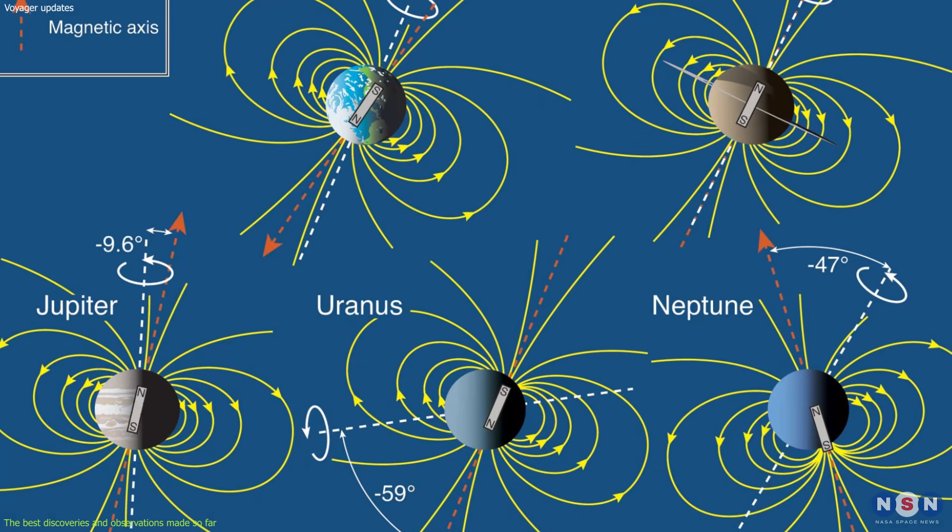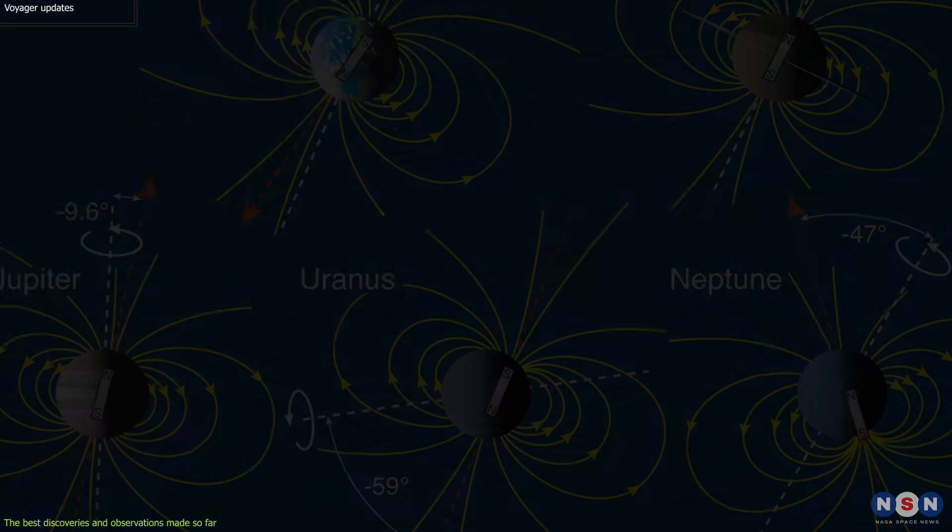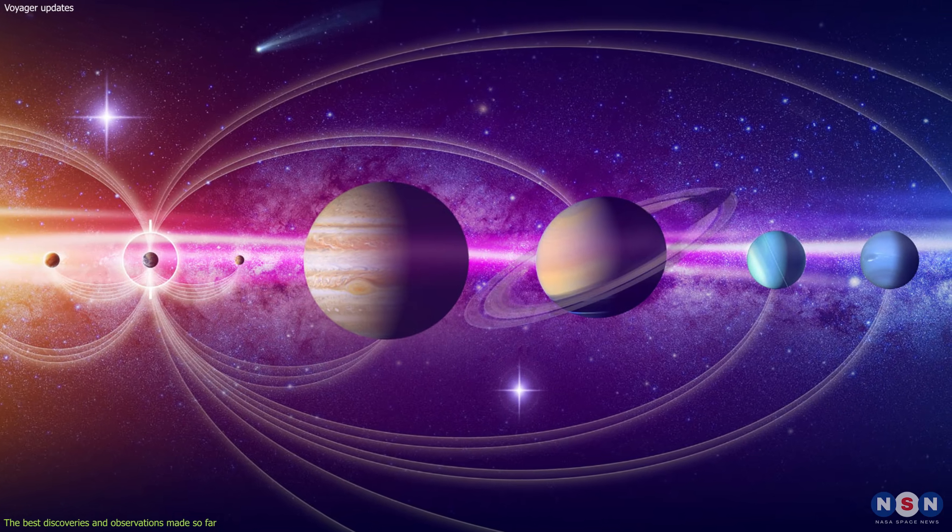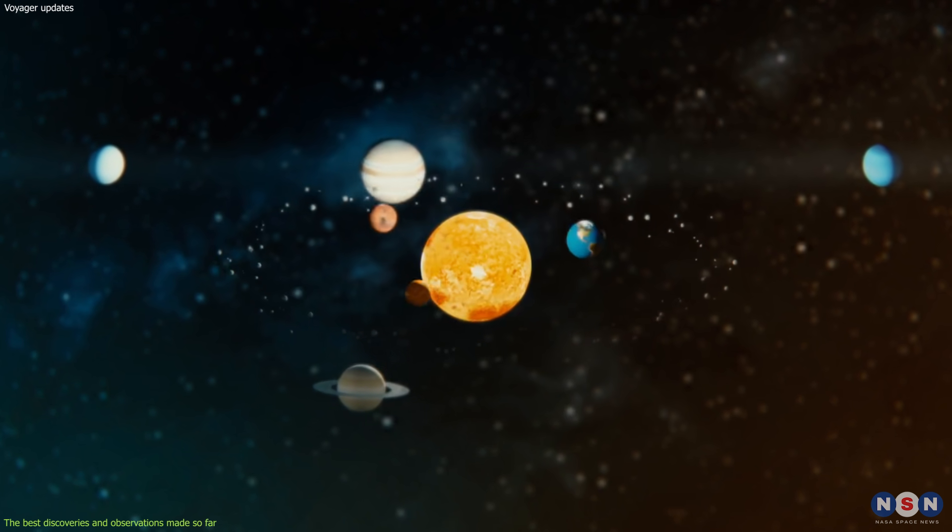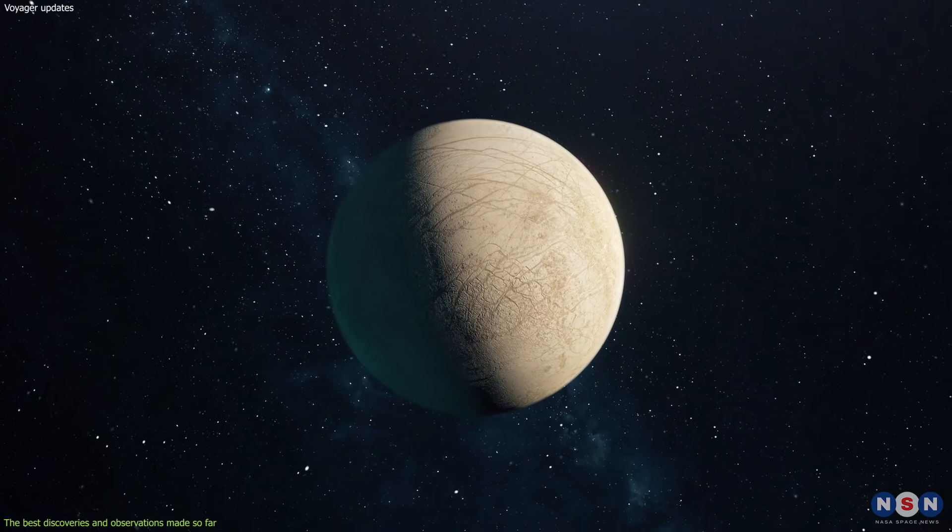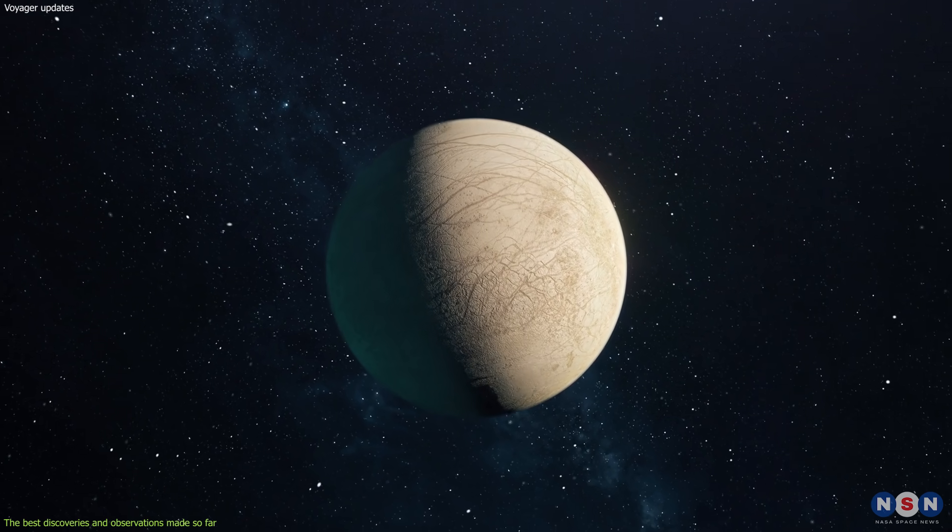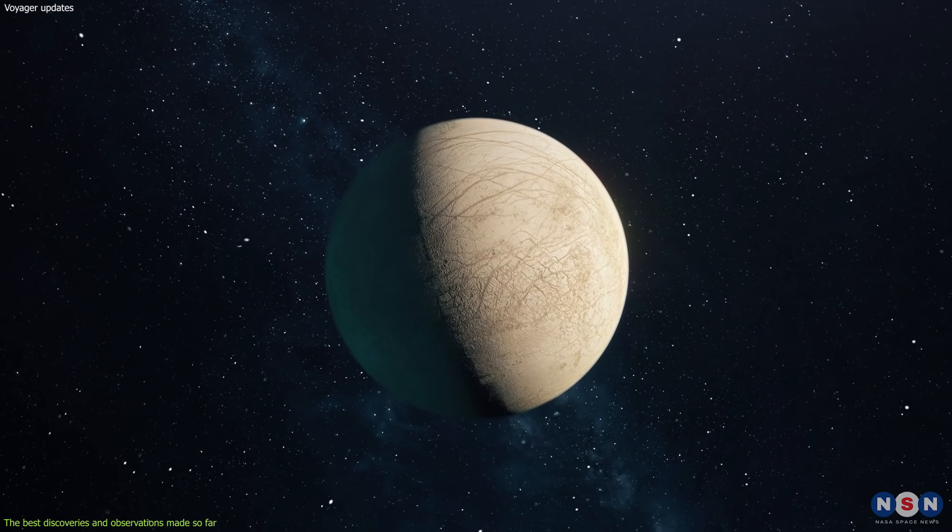They measured the magnetic fields, the atmospheres, and the temperatures of the outer planets and their moons. These measurements show that the outer planets have different compositions and structures than the inner planets. They also show that some of their moons have thin atmospheres that vary with time and location.